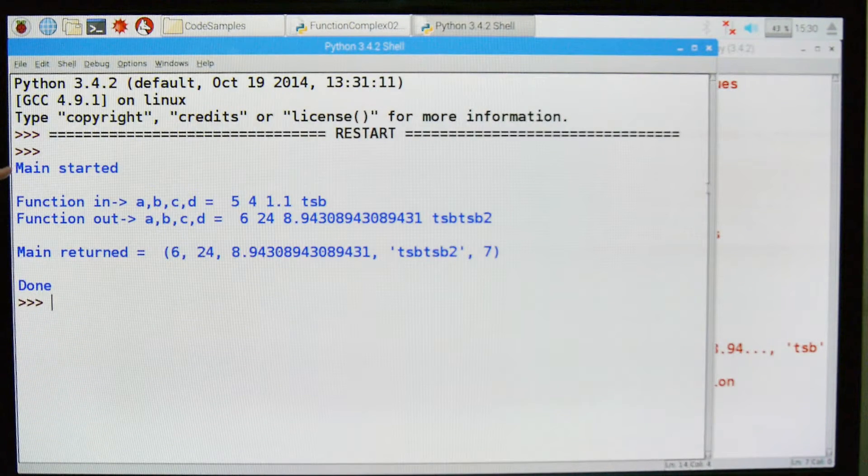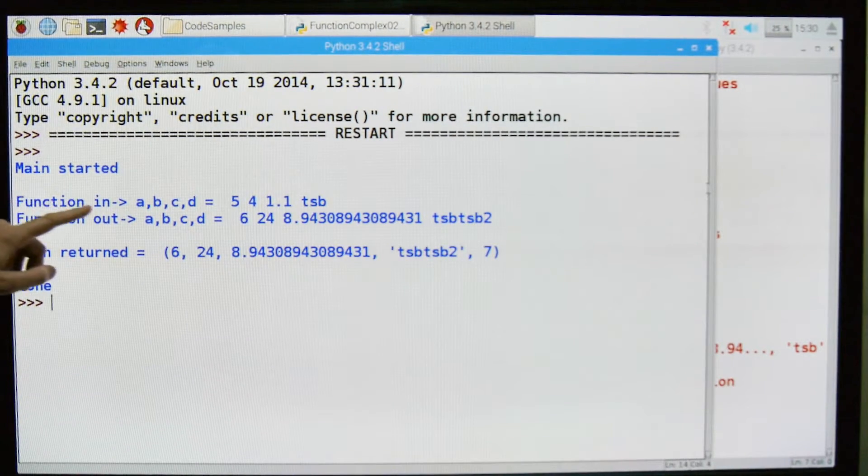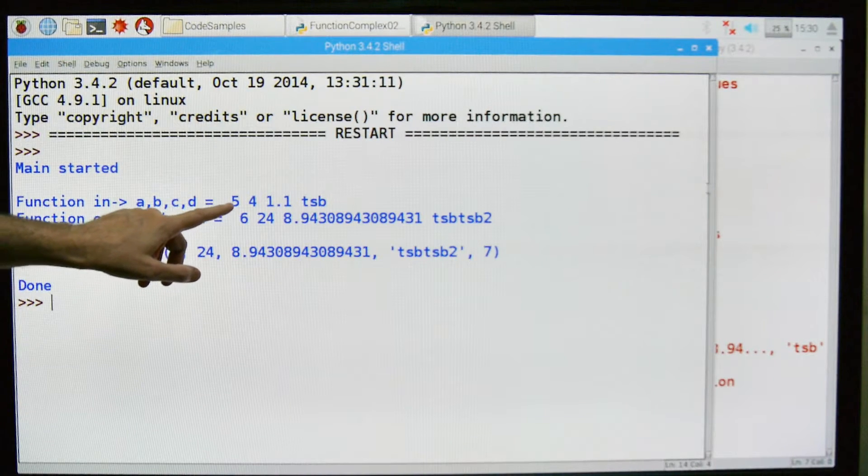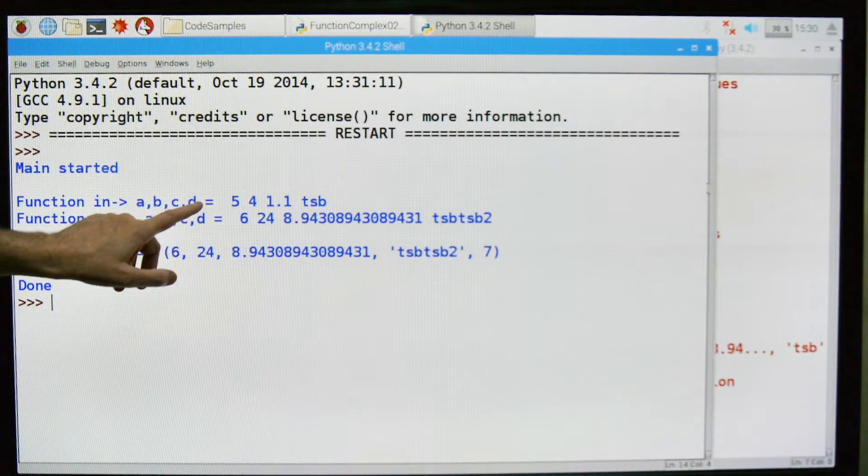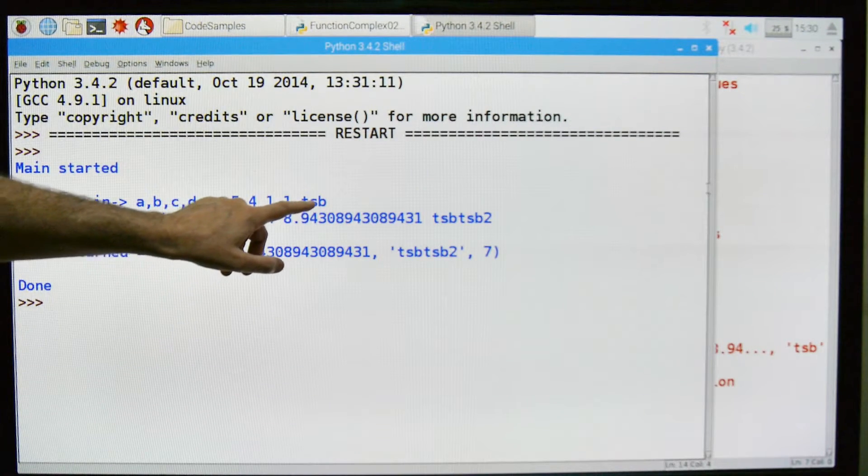Okay, here's where we started the main, here's where we put in the function, this is the function, this is what's coming into the function. So we have the a, b, c, d, we actually have an e, but again we're not using it for anything. So it's the 5, the 4, the 1.1, and the TSB.